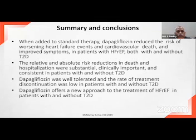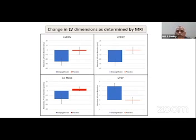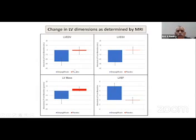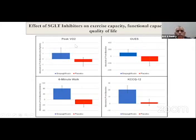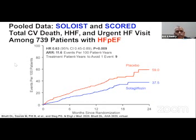Dapagliflozin offers a new approach to management of heart failure patients. In a randomized clinical trial involving 84 patients, at six months end-diastolic volume, systolic volume, LV mass, and ejection fraction all favorably and significantly improved compared to placebo. Exercise parameters also improved. These findings are considered a class effect shared across SGLT2 inhibitors.